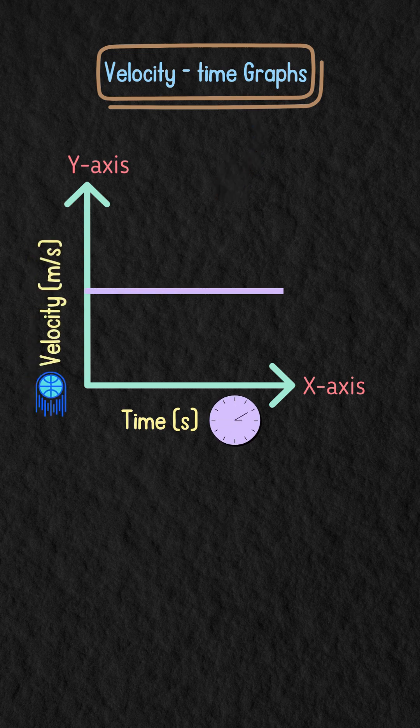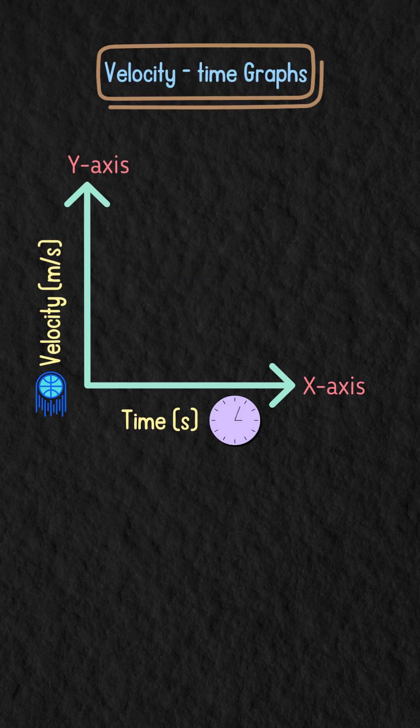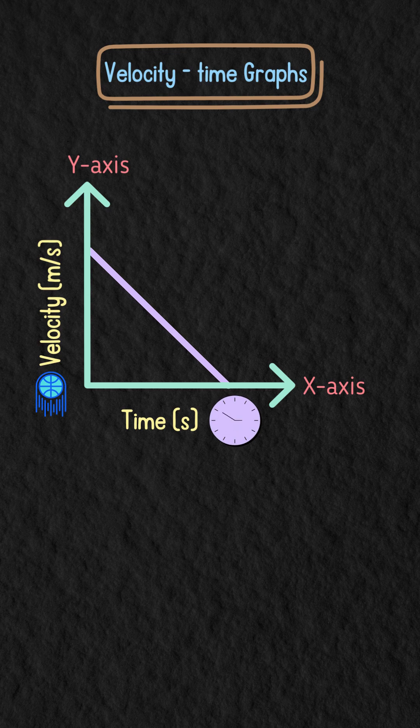If the graph has a horizontal line, it means the object is moving at a constant speed. If the line is sloping upwards, the object is accelerating, and if it slopes downward, the object is decelerating.